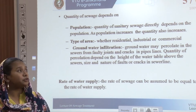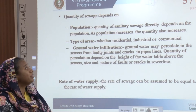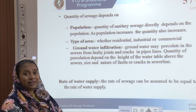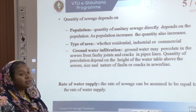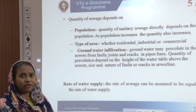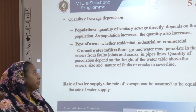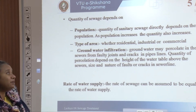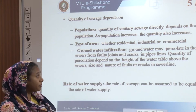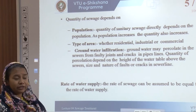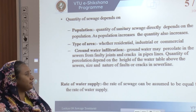The quantity of sewage in both systems depends on the population — as population increases, quantity also increases — the type of area, whether residential, industrial, or commercial, and the groundwater infiltration that occurs. Groundwater percolates into the sewers through faulty joints and cracks, and the quantity of percolation depends on the height of the water table above the sewers and the size and nature of the faults and cracks.